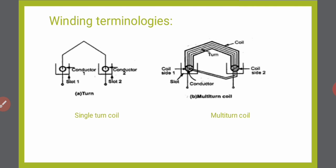These are the three definitions: conductor, turn, and coil. Next is coil side. A coil consists of many turns as discussed. The part of the coil in each slot is called the coil side. The part of the conductor in slot 1 is called coil side 1, and the part of the conductor in slot 2 is called coil side 2, as shown in figure B.